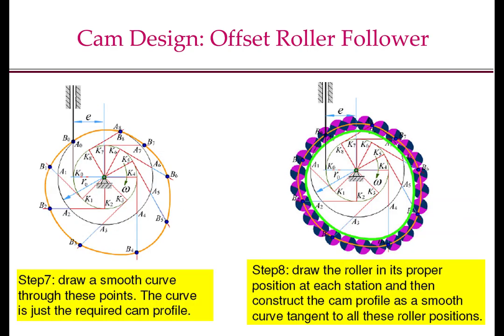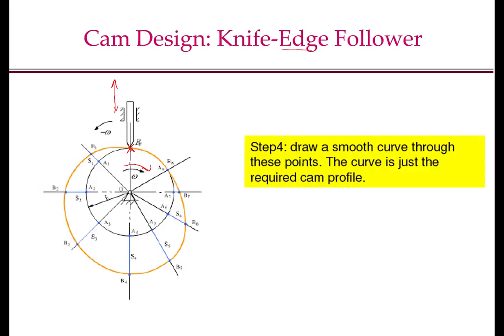Now we draw a smooth curve through these points. If we were designing a knife-edge follower, this orange curve would be our cam profile. But since we are using a roller follower, and this is the locus of the tracer point or the center of the roller follower, we have one additional step: we draw the roller at each Bi point and then construct the cam profile by drawing a smooth curve tangent to all these roller positions. The green curve shows the final cam profile for the roller follower. For a roller follower with zero offset, the same roller-drawing step must also be applied.